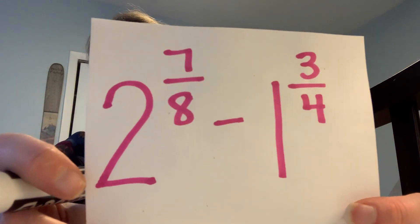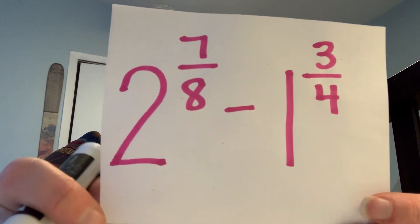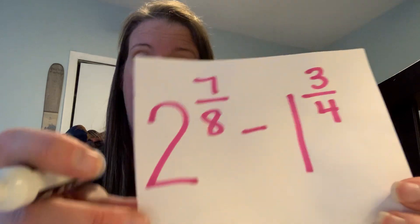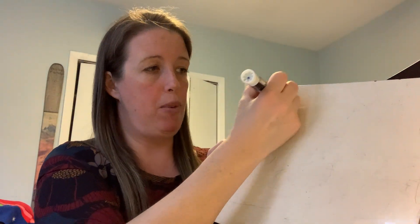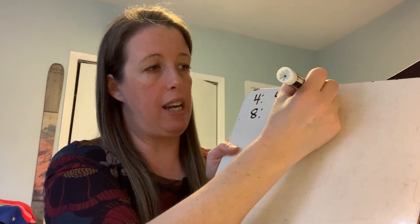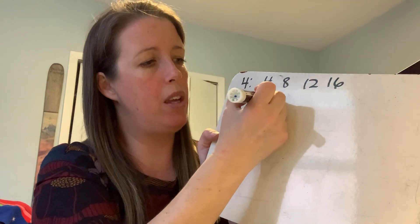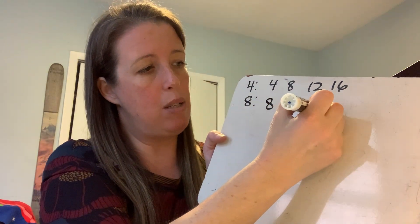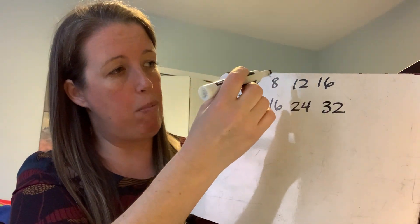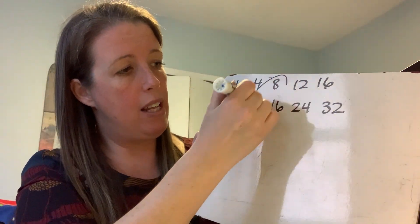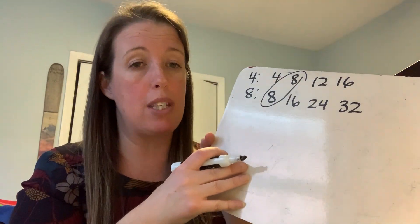Two and seven-eighths minus one and three-fourths. I have eighths and fourths, which are not common, so I'll find common denominators. Multiples of four: 4, 8, 12, 16. Multiples of eight: 8, 16, 24, 32. I can see they both have eight — they also both have sixteen, but eight is the least common multiple, so I'm going to use that one.